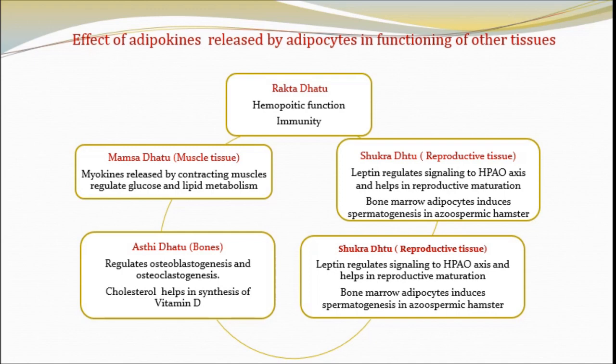Regarding the effect of adipokines released by adipocytes in functioning of other tissues — in Rakta Dhatu, adipocytes perform hematopoietic function and maintain immunity. In Mansa Dhatu, myokines released by contracting muscles regulate glucose and lipid metabolism. In Asthi Dhatu, adipocytes regulate osteoblastogenesis and osteoclastogenesis, and cholesterol helps in synthesis of vitamin D. In Shukra Dhatu, leptin regulates signaling to the hypothalamic-pituitary-adrenal-ovarian axis and helps in reproductive maturation.